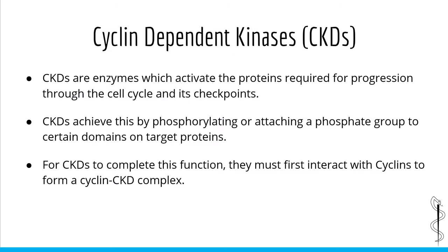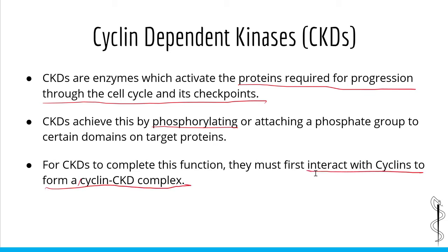CDKs are enzymes which activate proteins required for cell division and progression through the cell cycle and its checkpoints. CDKs activate these proteins by phosphorylating them — that is, attaching a phosphate group to certain domains on the protein. However, CDKs alone cannot accomplish this. In order to successfully phosphorylate and activate proteins, they must first interact with a cyclin to form a cyclin-CDK complex, which requires cyclins to be present in the intracellular space.